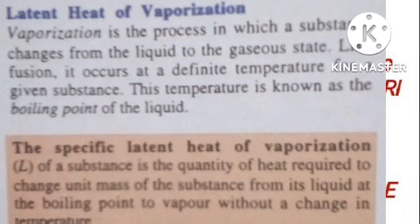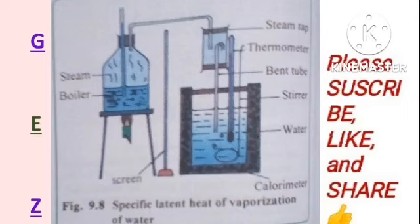The reason there is no change in temperature is because for latent heat, there is no change in temperature during the phase change. Now let's talk about an experimental setup used to determine the specific latent heat of vaporization of steam. You can find it by passing steam into water in a calorimeter where it condenses and releases its latent heat.